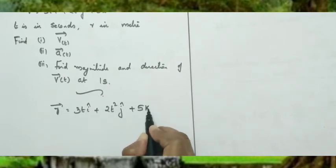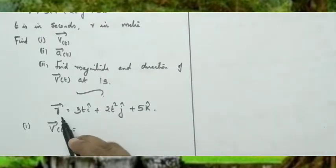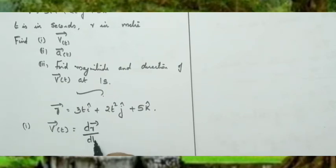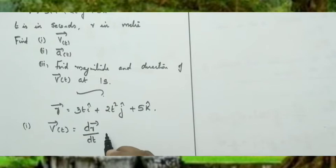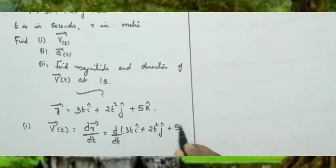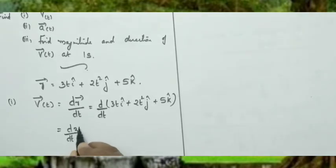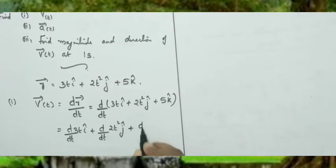To find the velocity vector v(t), we know that velocity is the rate of change of displacement. Since position is given, velocity is dr/dt. So dr/dt equals d/dt of (3t i-cap plus 2t² j-cap plus 5k-cap), which can be expanded as d/dt of 3t i-cap plus d/dt of 2t² j-cap plus d/dt of 5k-cap.